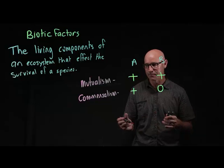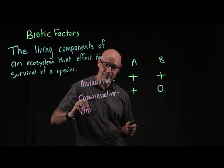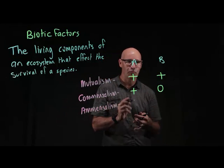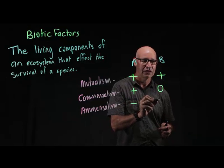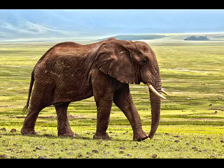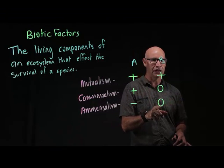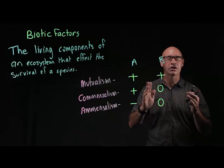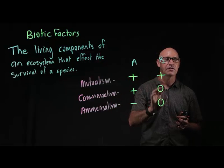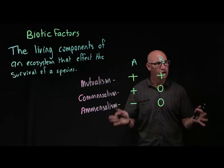So does commensalism really happen in nature? Not sure. The next one is amensalism, and this one does happen in nature. Amensalism is when one species is negatively affected and the other species has no effect at all. A great example is an elephant trotting down to a waterhole to drink, squashing and killing the grass along the way. The grass is negatively affected, the elephants aren't benefited and aren't negatively affected at all. One is negatively affected; the other has no benefit and no negative effect — it's neutral.